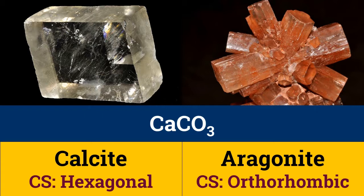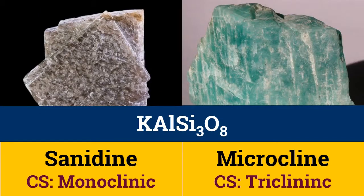Aragonite forms at higher pressure than calcite. In calcite, calcium is in 6-fold coordination with oxygen, which means each calcium atom is surrounded by 6 oxygen atoms. However, in aragonite, calcium is in 9-fold coordination with oxygen, which needs higher pressure conditions to form. The dimorphs of KAlSi3O8, sanidine and microcline, have monoclinic and triclinic crystal systems respectively.